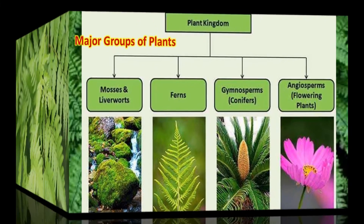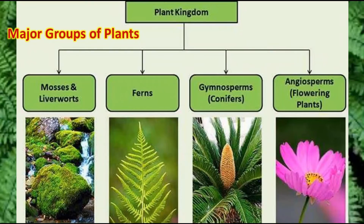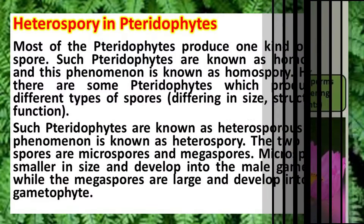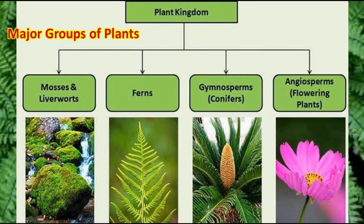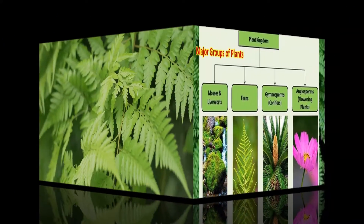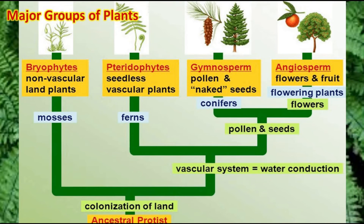Heterospory originated in ferns, and seed habit originated in gymnosperms. The seed habit present in gymnosperms is because of the heterospory which originated and evolved in pteridophytes or ferns. Bryophytes are the non-vascular plants, pteridophytes are the seedless vascular plants where the origin of heterospory can be seen, and gymnosperms are the first group of plants to show seed habit, producing naked seeds directly without the presence of any ovary.